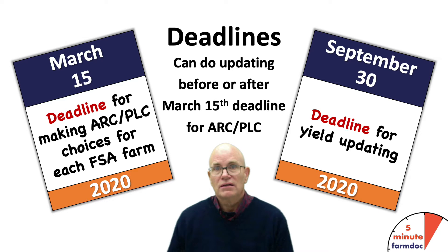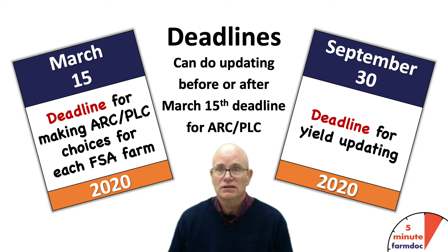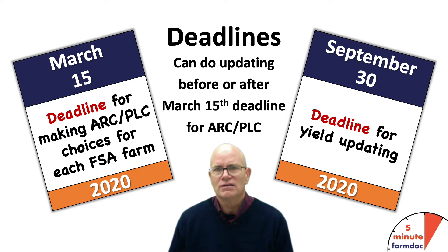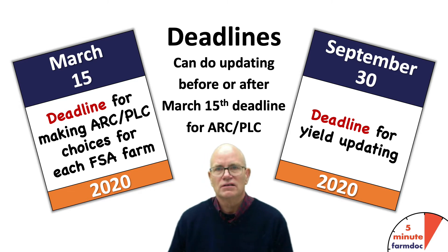The yield updating decisions can be made before or after the ARC/PLC choice. We could do the yield updating decisions right now, even if we haven't made the ARC/PLC choice. Doing that now would be okay, or waiting until after the March 15th deadline would be fine as well. If you try to do the yield updating between February 15th and March 15th, FSA will likely tell you to wait and do it after the March 15th deadline.